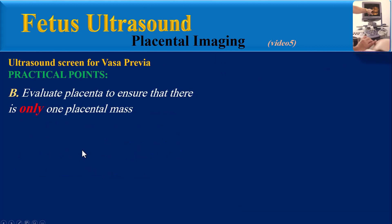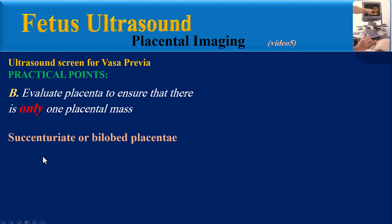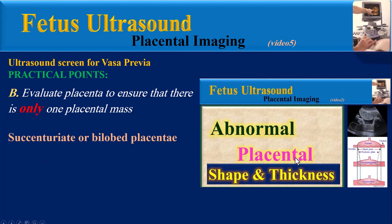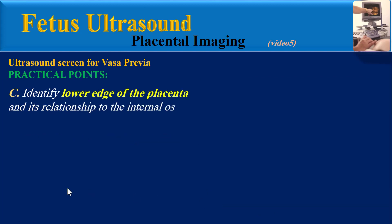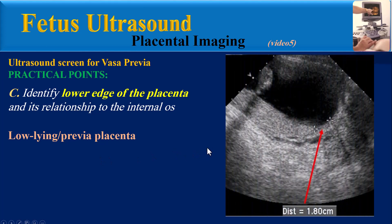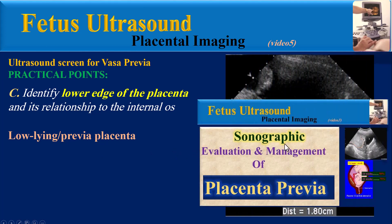Another practical point: evaluate the placenta to ensure that there is only one placental mass — we must rule out succenturiate or bilobed placenta. Full explanation can be found in video 2, with its link in the description. Also identify the lower edge of the placenta and its relationship to the internal os to rule out low-lying placenta or placenta Previa, with full explanation in video 3 of this series.